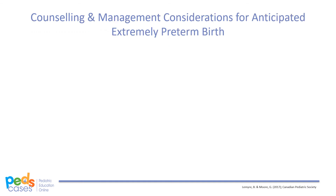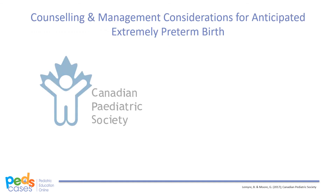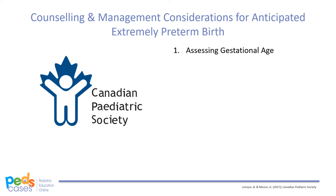Knowing some of the factors that may contribute to preterm delivery, the Canadian Pediatric Society has some important counselling and management considerations for anticipated extremely preterm birth. First, it is crucial to assess gestational age. Establishing an accurate gestational age using first trimester crown-rump length is crucial for counselling, management, and support of the family. Transferring women at risk for extremely preterm birth to tertiary perinatal centres improves maternal care and provides better opportunities for counselling with MFM specialists and neonatologists.